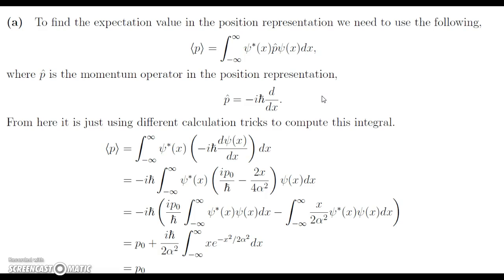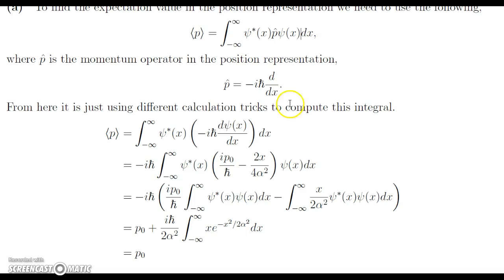Let's jump into the first expectation value calculation. To calculate the expectation value of momentum in the position representation, we have the integral from negative infinity to infinity where we sandwich the momentum operator between the complex conjugate of the wave function and the wave function, then integrate. We know that p-hat is the momentum operator, equal to negative iℏ d/dx, so we have the differentiation operator here. We then apply the momentum operator to the right.